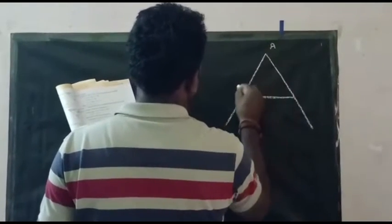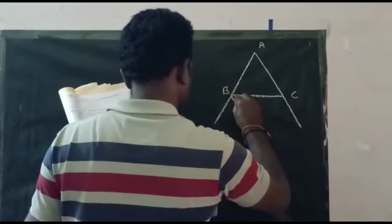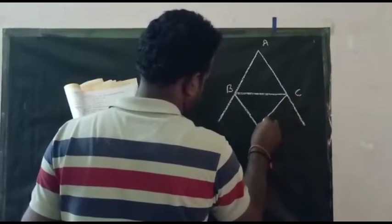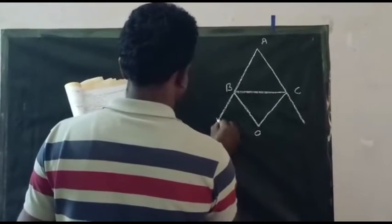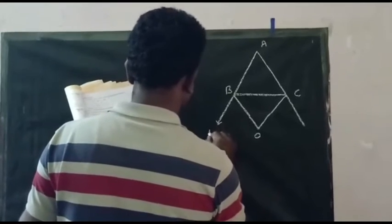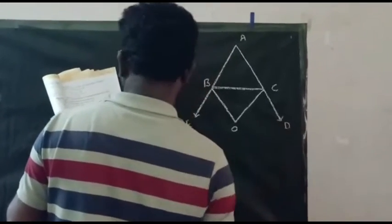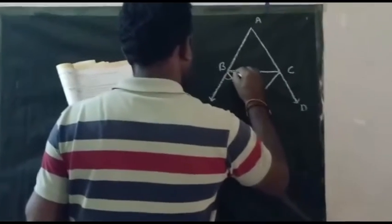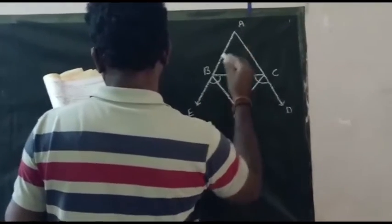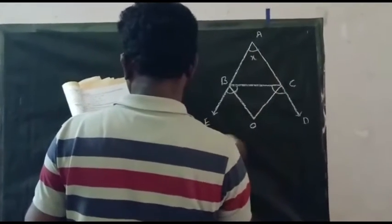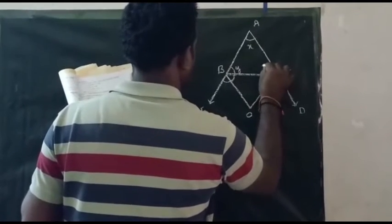This is A, B, C. I will draw the figure first of all. This is O. This is E. This is D. This angle is equal to X degrees. This angle is equal to Y degrees. This angle is equal to Z degrees.